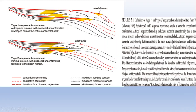Here you can observe the Type 1 sequence boundary has extended behind the off-lap breakpoint. In contrast, the Type 2 sequence boundary occurs just above the off-lap breakpoint — there is no erosion behind the off-lap breakpoint.